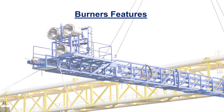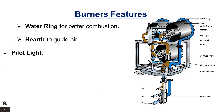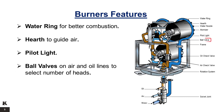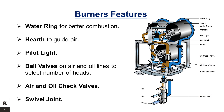Burner Features. Burners are usually equipped with a water ring for better combustion. A hearth is used to guide the air. A pilot light is used to light the burner. Ball valves on air and oil lines are used to select the number of heads to be used. Air and oil check valves prevent air from passing into the oil line and vice versa. A swivel joint allows pivoting position of the burner.